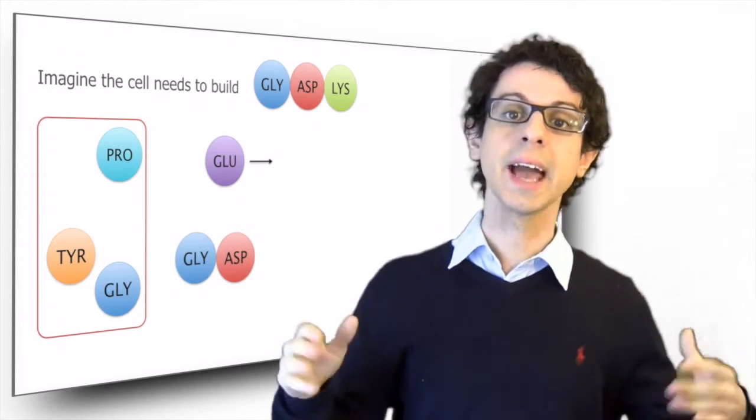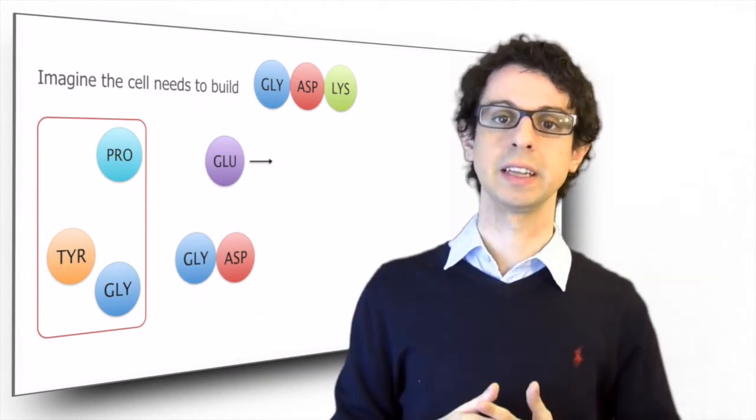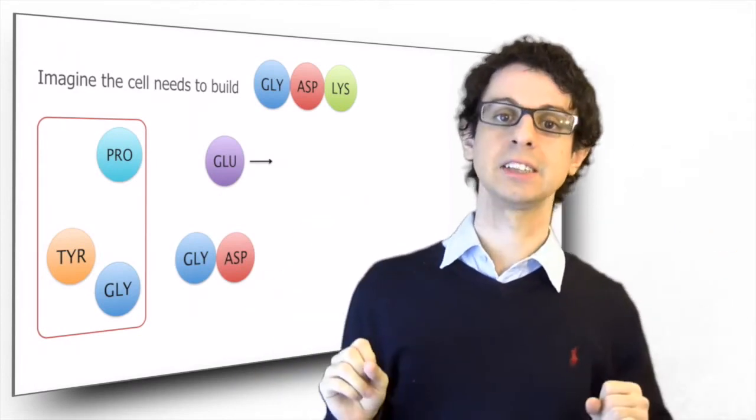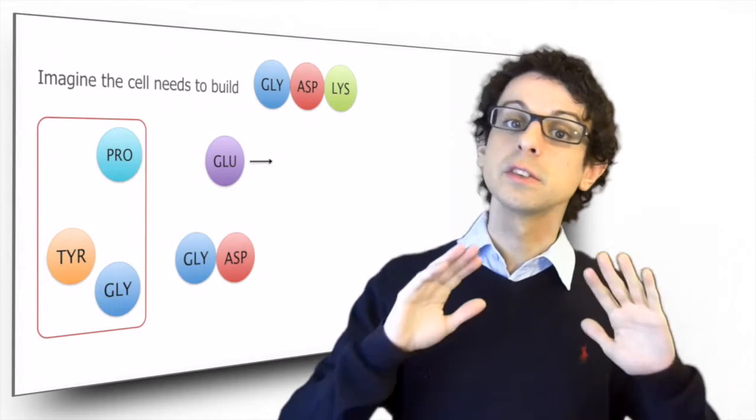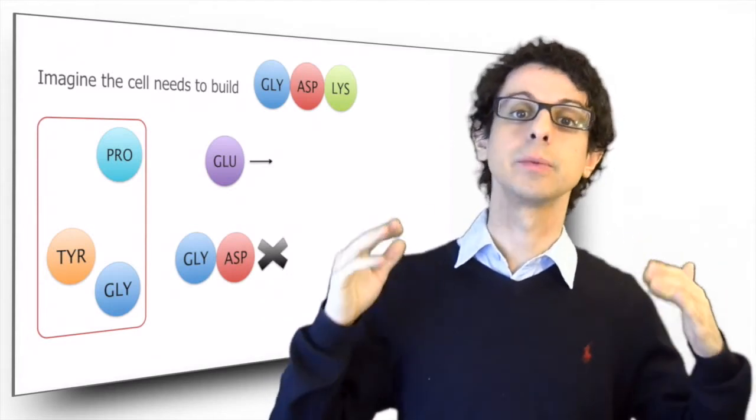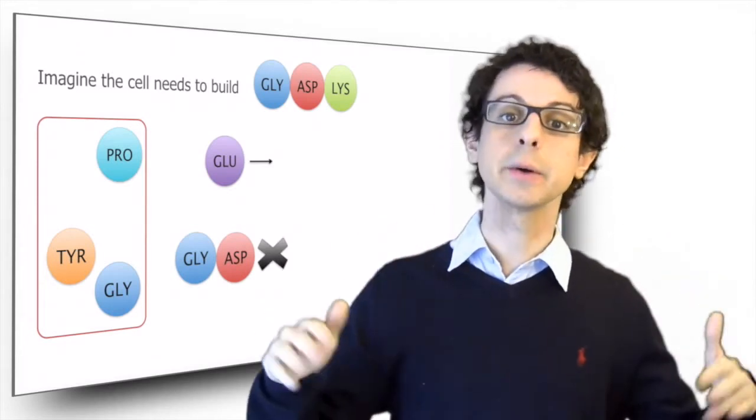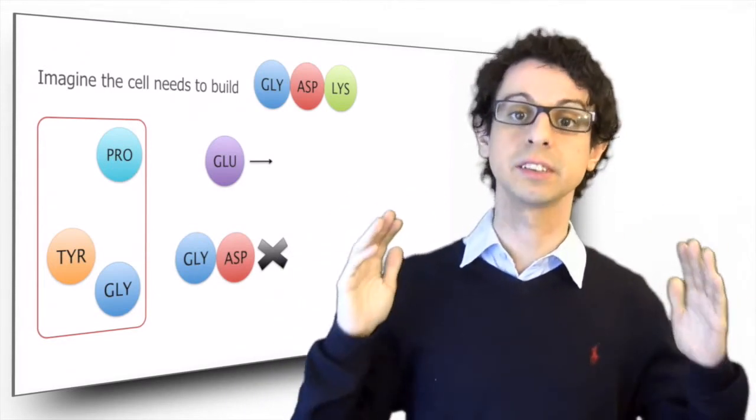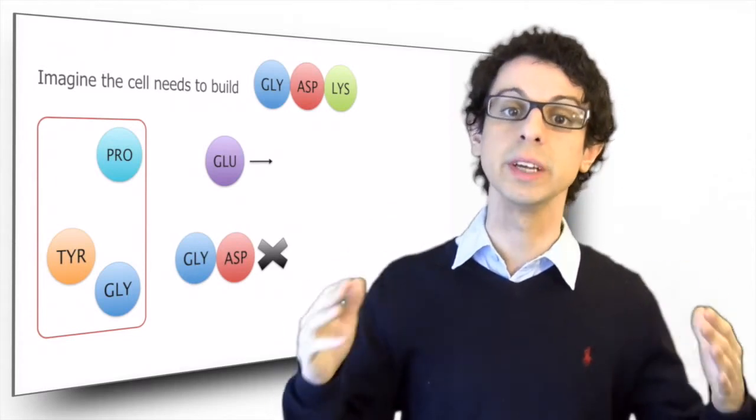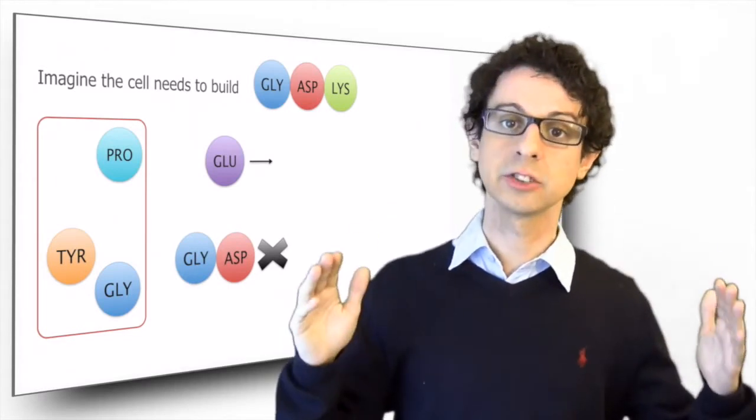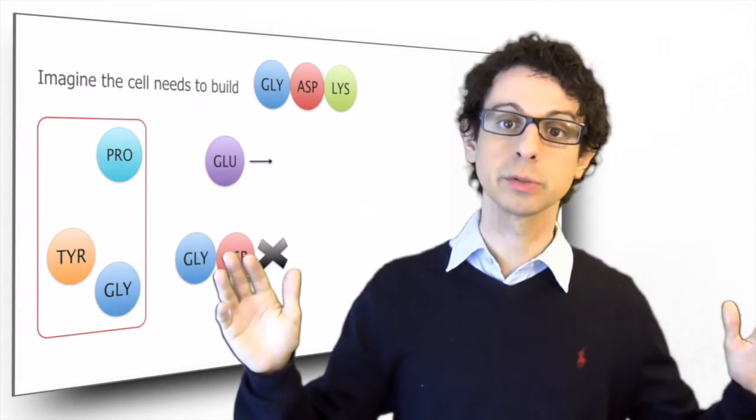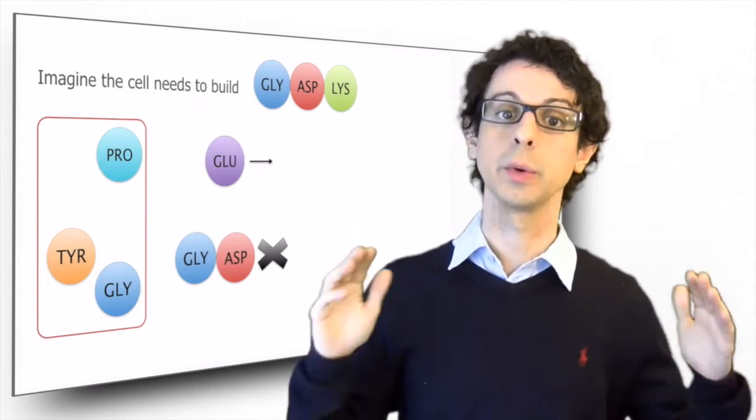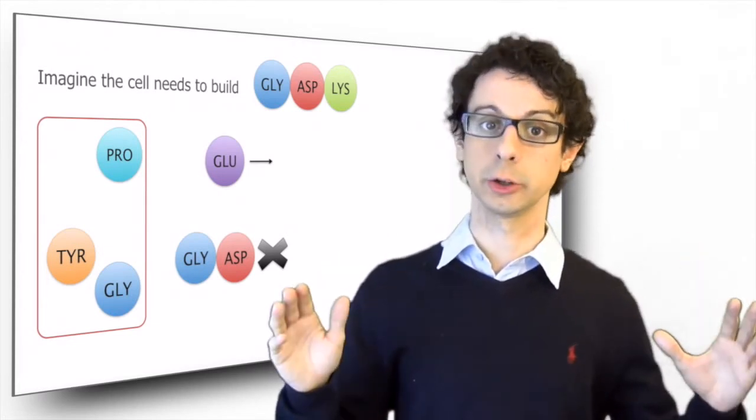Now we need lysine. And again, we are out of luck. There's no lysine available. But now we are in trouble. Because lysine is one of the nine essential amino acids. So there's no way we can make lysine starting from what we have. It doesn't matter, we can have thousands of other amino acids. If we don't have lysine, we will be stuck. And we will not be able to make the protein we need. Because lysine is essential. We don't have it. It doesn't matter how much protein we have, unless we have that amino acid, we are stuck. We cannot go on with our protein synthesis, which of course is not good.